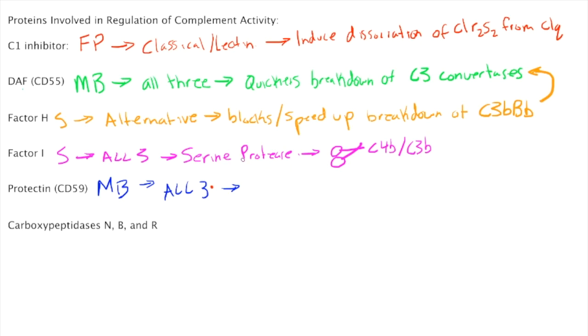What it does is it binds C5B678. Remember, that's involved in the polymerization of C9. So this would be your pre-MAC complex regulation right here. It'll block the binding of C9. So it binds C5B678 and then blocks C9 formation, which will block MAC formation.